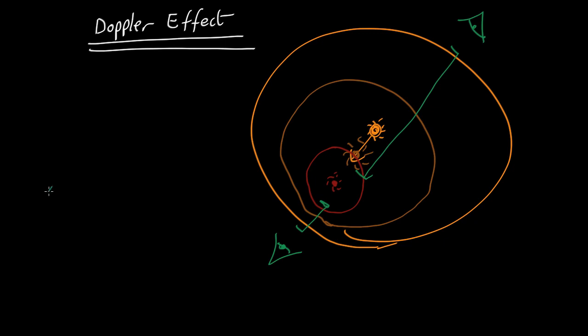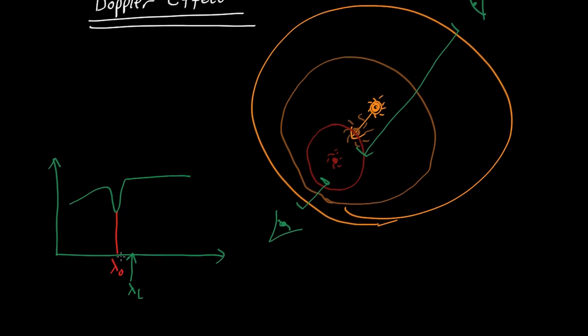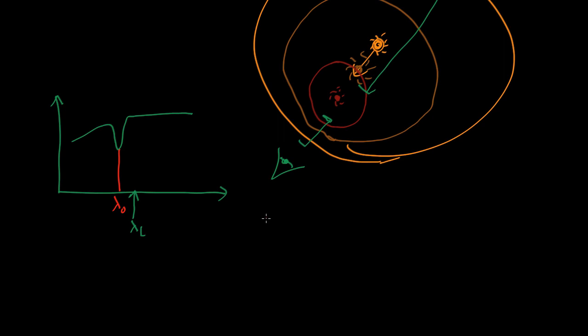How do you measure it? Well, you take a spectrum, and let's say you expect a particular line, an absorption line, to have this wavelength. Let's call it the lambda laboratory. But when you look at the spectrum, you actually see it's over here at a different wavelength, lambda observed. We can measure the shift, which is equal to lambda observed minus lambda laboratory divided by lambda laboratory.